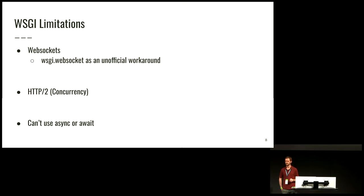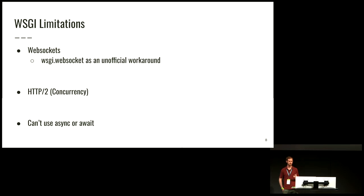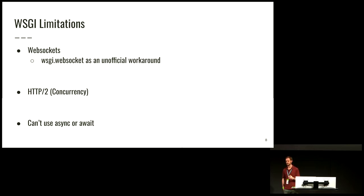Over roughly 15 years, WSGI has started to show its age, mostly because of changes in web systems around it. The first limitation is that it has no official way to deal with WebSockets. As you saw with that callable, it's a request-response cycle — it expects you to return a response and be done. With WebSockets, the connection stays open and you send messages back and forth. There is an unofficial workaround, almost a wrapper around the socket, but it depends on which concurrency framework you're using — so it's not standardized. For the same reason, it doesn't really handle HTTP/2 concurrency well.